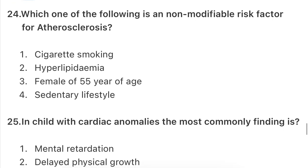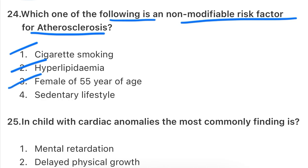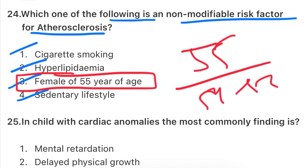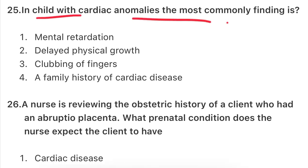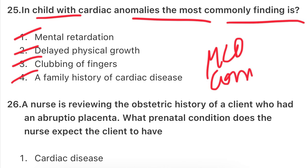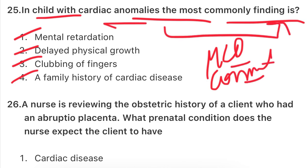Next question: which is a non-modifiable risk factor for atherosclerosis? This is a non-modifiable risk factor. Next question: in a child with cardiac anomaly, the most common finding is - if a child has been diagnosed with a cardiac anomaly, what do you most commonly see? The options are: mental retardation, delayed physical growth, clubbing of fingers, or a family history of cardiac disease. Write your answer for this MCQ in the comment section.